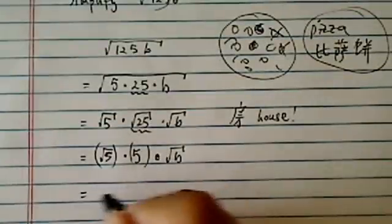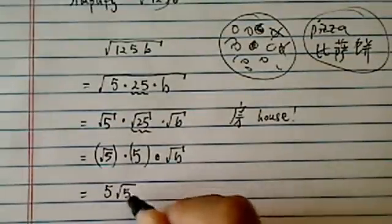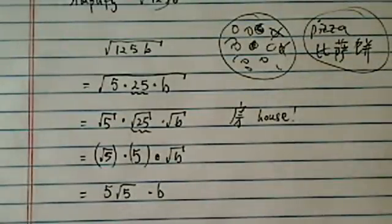Okay, so when I simplify it out, I have 5 radical 5 times B. All right, that's how we do it. Got it? Good.